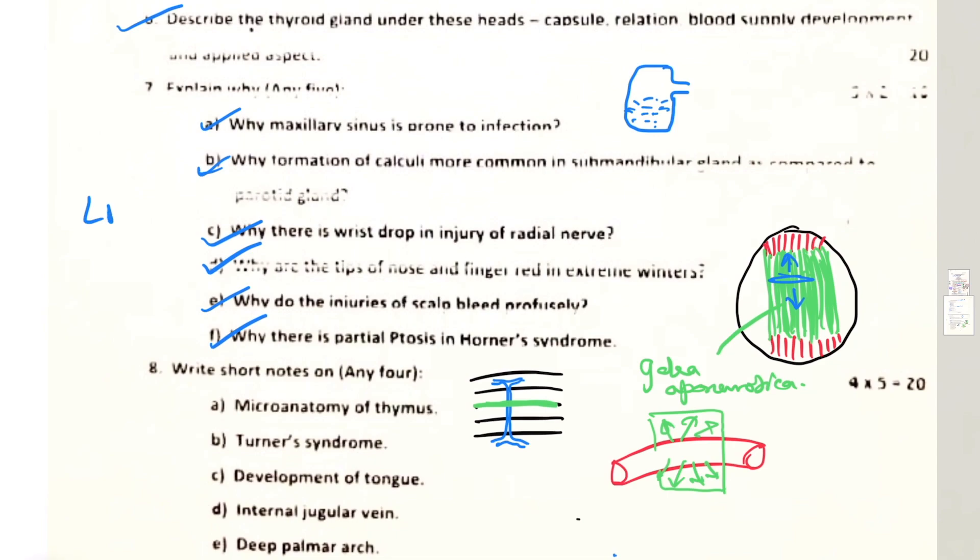Why there is partial ptosis in Horner syndrome? You know this muscle LPS, levator palpebrae superioris, it has two components: skeletal muscle and a smooth muscle. Smooth muscle is also called Müller's muscle. Skeletal muscle is innervated by third cranial nerve oculomotor nerve, smooth muscles are innervated by sympathetic fibers. That's why even in oculomotor nerve injury there is partial ptosis, and even in Horner syndrome where there is loss of sympathetic innervation, then also there is partial ptosis. Horner syndrome is due to loss of sympathetic innervation to the structures in the orbit.